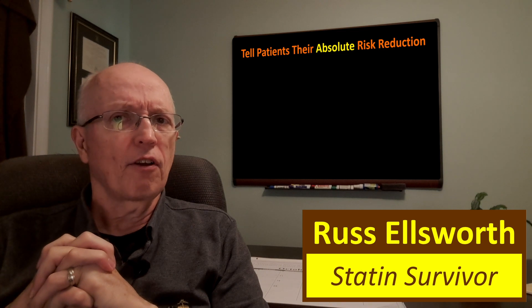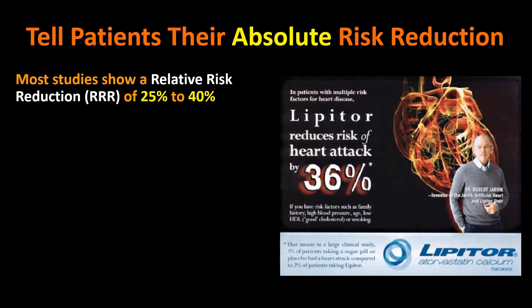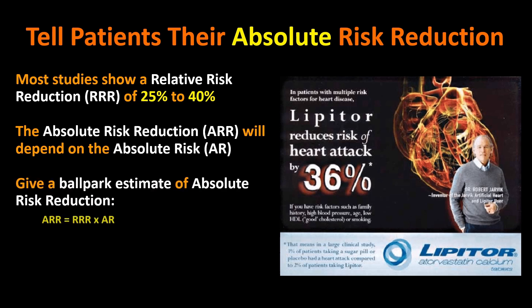Doctors should tell patients their absolute risk reduction that they would get from taking statins. Most studies show a relative risk reduction — like in this famous Lipitor ad — somewhere between 25% and 40%. This one was 36%. But the absolute risk reduction for that group was only 1.1%. The problem with just using that 1.1% value is that the absolute risk reduction you will get actually depends on what your absolute risk is. To get a ballpark estimate of your absolute risk reduction you simply multiply the relative risk reduction from the product.